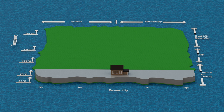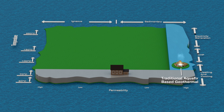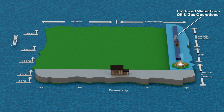On the right-hand side, you will see the traditional aquifer-based geothermal, and within that, occasionally the use of produced water from oil and gas operations. This example comes from Vermilion in France, where the reuse of the hot water produced from their oil and gas operations is used for agricultural heating.